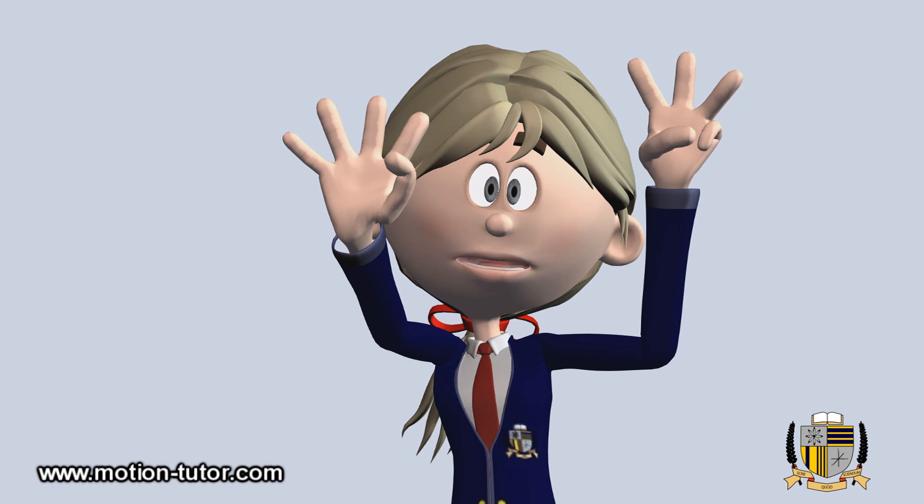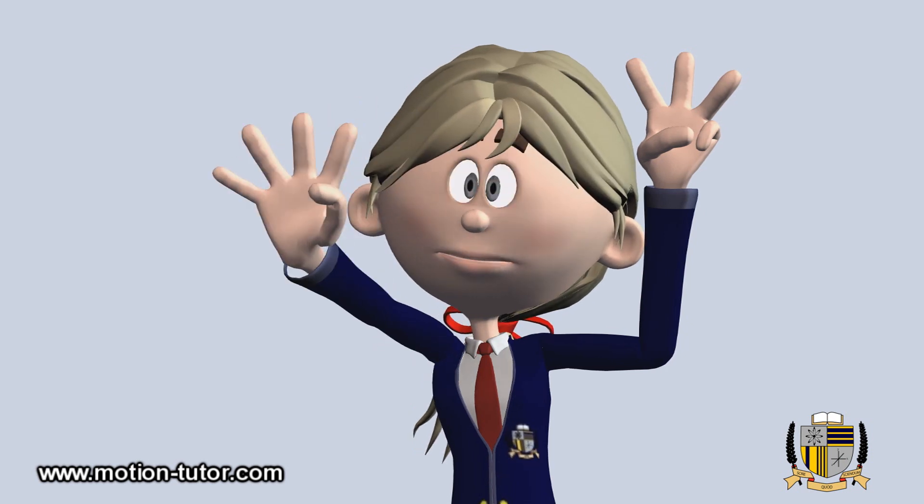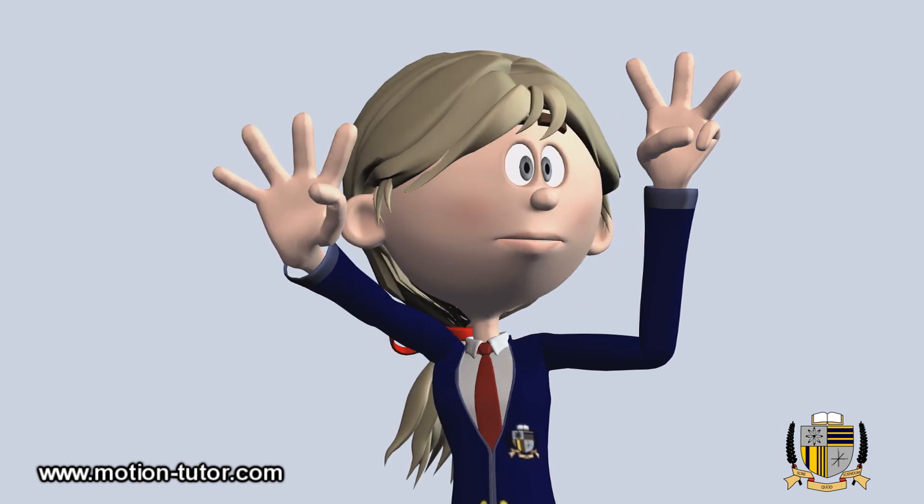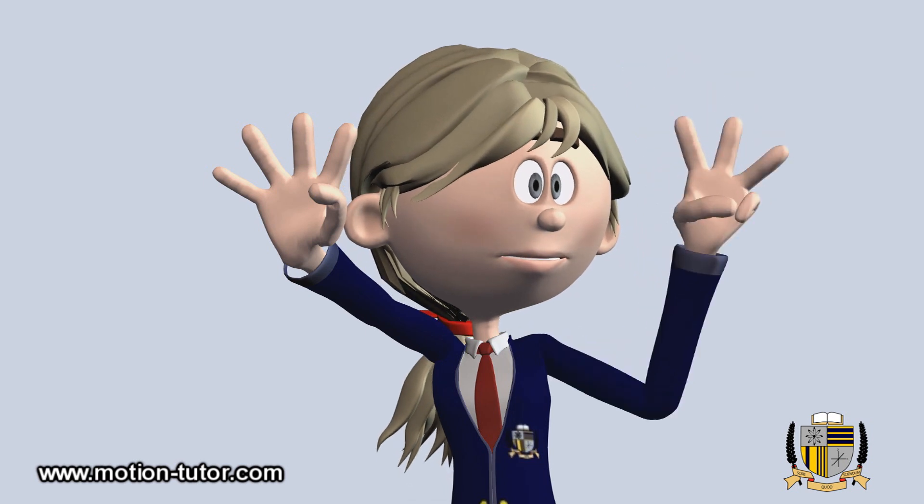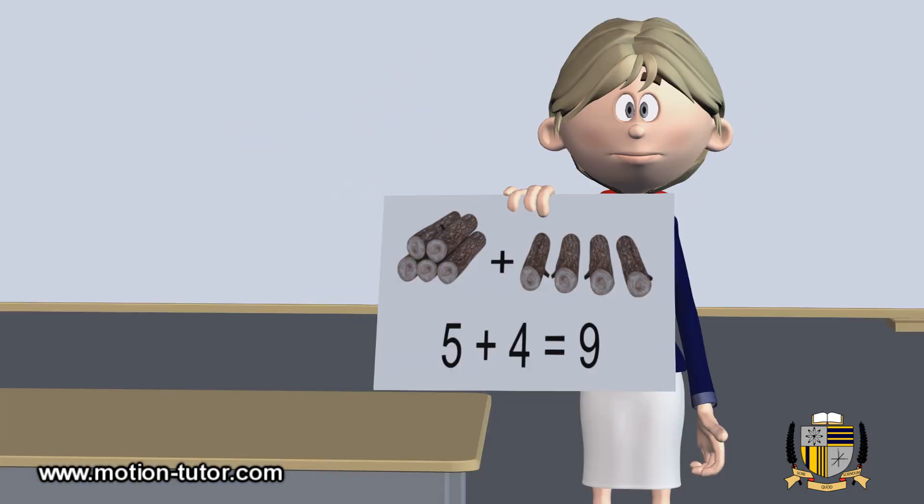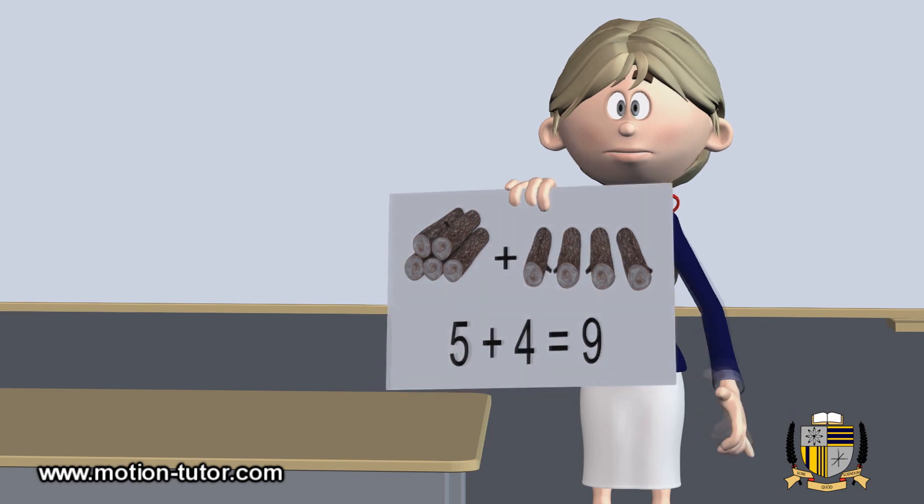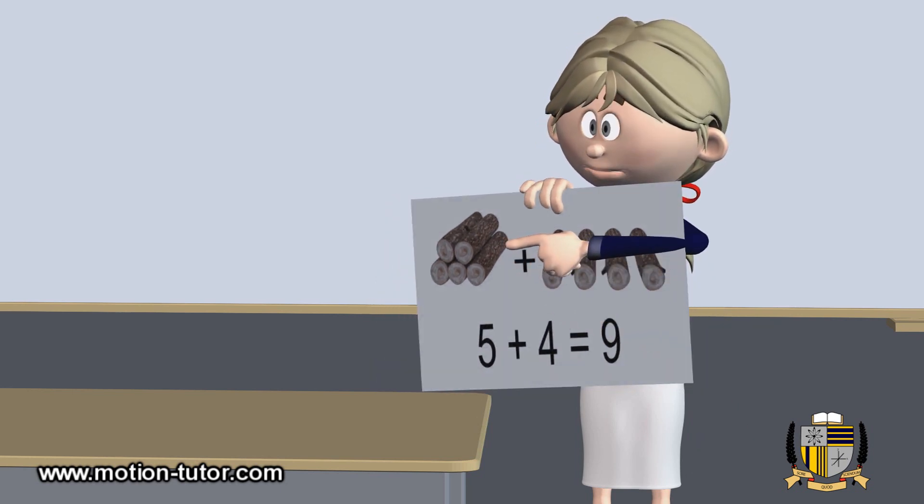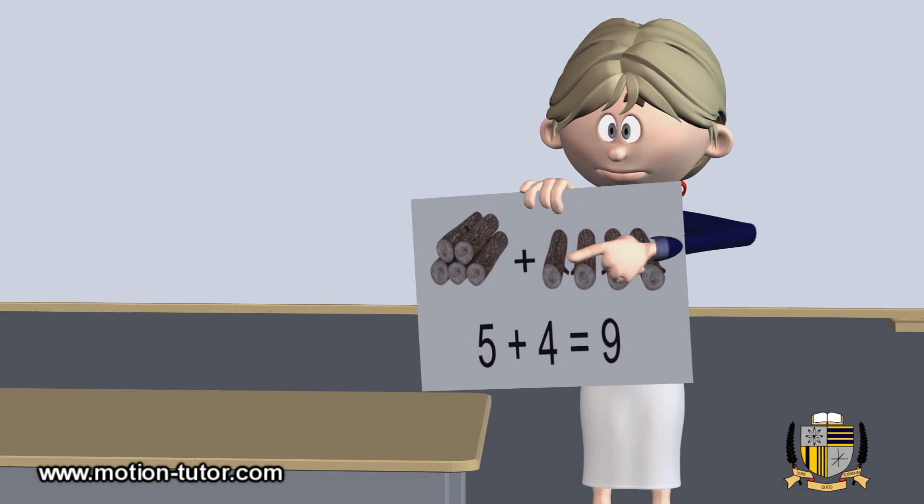So that's what counting on is. We start to count at a certain number and then we just count on, and we find the answer. So here's five plus four. We'll start at five and then we're going to go four more and we'll find our final answer.